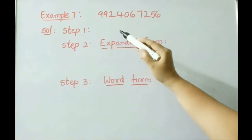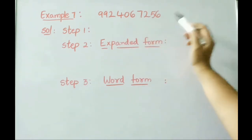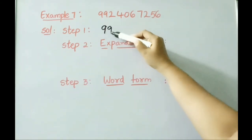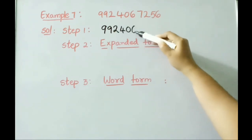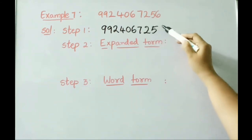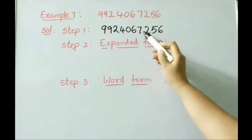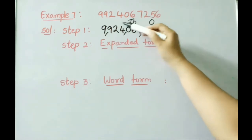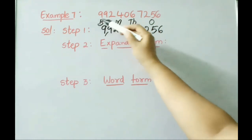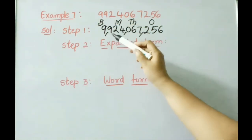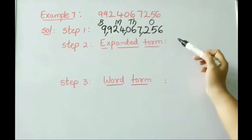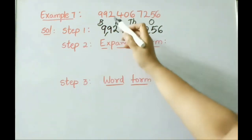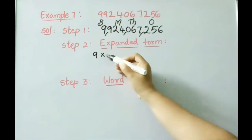Let us see Example 7: the number is 9,924,067,256. Separate from right to left in groups of three digits using commas. Writing the periods: ones period, thousands period, millions period, billions period. The number is 9,924,067,256. Let us write the expanded form: 9 billion — write 9 × 1,000,000,000.